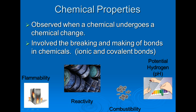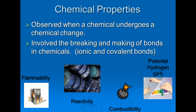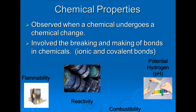Chemical properties are observed when a chemical undergoes a chemical change — that's when you end up with a new substance. Examples include flammability (does something catch on fire?), reactivity (like iron reacting with oxygen to form rust), combustibility (when something can explode, like fireworks), and having a pH or potential hydrogen. Chemical properties involve the breaking and making of bonds in chemicals.